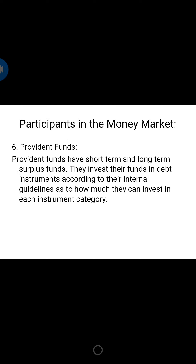The next participant is provident funds. Provident funds have short-term and long-term surplus funds and invest in debt instruments according to internal guidelines on how much they can invest in each instrument category. Instruments that provident funds can invest in include government securities, state development loans, bonds guaranteed by central and state governments, bonds or obligations of public and private sector undertakings, and bonds issued by financial institutions and private sector companies carrying an acceptable rating by at least two rating agencies.